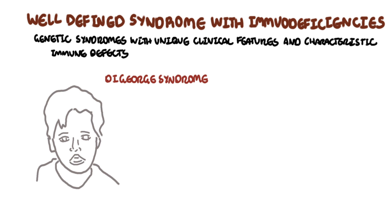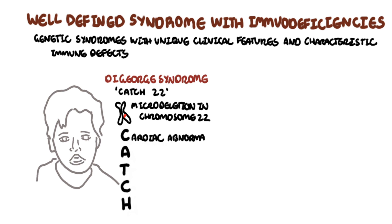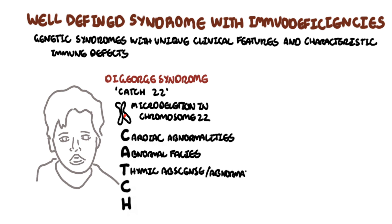For DiGeorge syndrome, remember CATCH 22 — referring to the microdeletion in chromosome 22. C is for cardiac abnormalities. A is for abnormal faces, where you get a distinct type of look. T is for thymic absence or abnormality. C is for cleft palate. H is for hypocalcemia resulting from parathyroid hypoplasia.